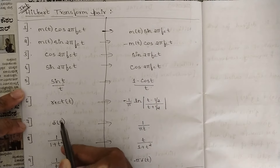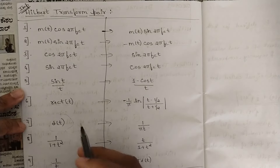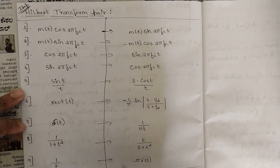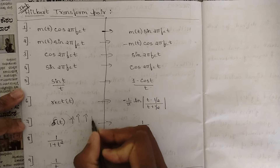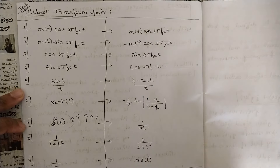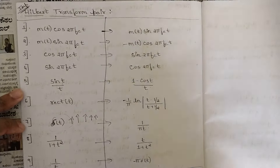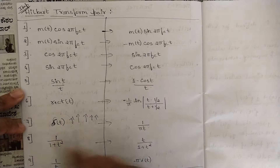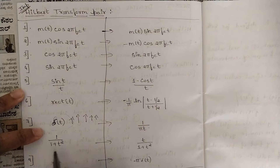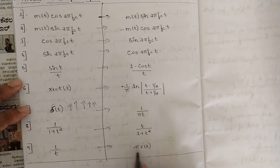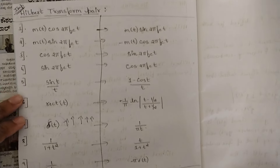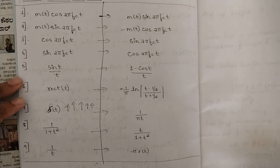Continuing the Hilbert Transform pairs: (7) δ(t) — the impulse function (also used in sampling theorem) — has Hilbert Transform pair 1/(πt); (8) 1/(1 + t²) ↔ t/(1 + t²); (9) 1/t ↔ −π·δ(t). Please pause the video and note down all these pairs from the table.